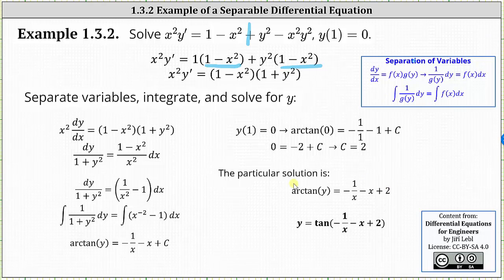The last step is to solve for y by taking the tangent of both sides. The tangent of arctangent y simplifies to y, giving us y equals tangent of the quantity negative one divided by x minus x plus two as the solution to the given initial value problem.